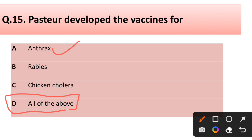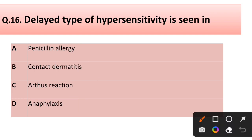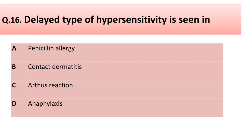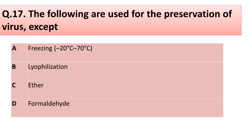Question number sixteen: Delayed type of hypersensitivity is seen in — polycytemia allergy, contact dermatitis, Arthur's reaction, or anaphylaxis? Correct answer is option B: contact dermatitis. Question number seventeen: The following are used for preservation of virus except — freezing at minus 20 to minus 70, lyophilization, ether, or formaldehyde? Correct answer is option C: ether is not used for preservation of virus.